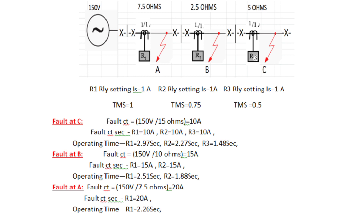In this figure, 150 volts is the source. The first feeder is 7.5 ohms, the second is 2.5 ohms, and the third is 5 ohms. If a fault comes at point C, 150 volts is connected across 7.5 + 2.5 + 5 = 15 ohms, so 150/15 = 10 ampere will flow. For easy calculation, IS for R1 = 1 ampere, TMS = 1, CTR = 1:1. For R2: IS = 1, TMS = 0.75, CTR = 1:1. For R3: IS = 1, TMS = 0.5, CTR = 1:1. So whatever fault comes, the same current value will flow in the relay.